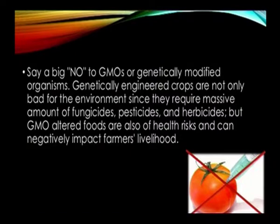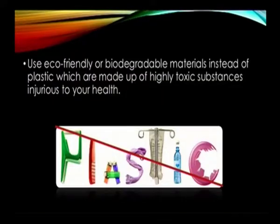Say a firm no to GMOs or genetically modified organisms, especially for farmers choosing seeds or saplings. Genetically engineered crops are bad for the environment since they require massive amounts of fungicides, pesticides, and herbicides. These altered foods also pose a big risk to health and can negatively impact farmers' livelihoods. Use eco-friendly or biodegradable materials instead of plastic, which is made of highly toxic substances injurious to our health.